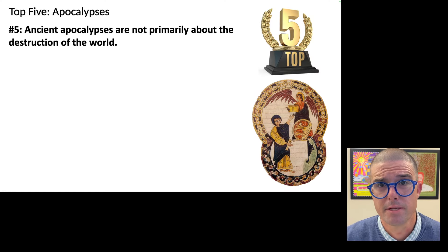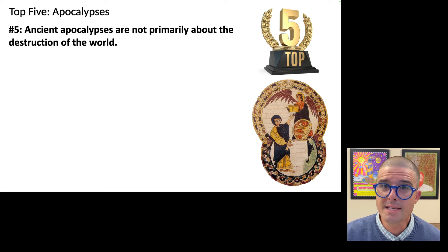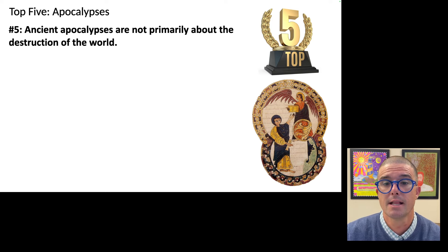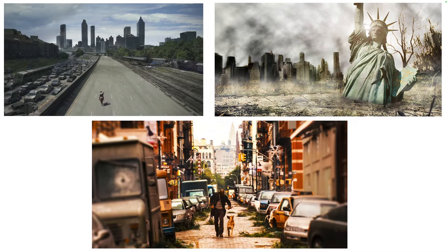Number five: ancient apocalypses are not primarily about the destruction or the end of the world. If you were to ask someone on the street to picture in their mind an apocalypse, they would likely think of images like these. The landscape is barren, vegetation is overgrown and taking over the asphalt in a busy city, and an iconic human-made structure like the Statue of Liberty is destroyed or in a state of shocking disrepair. The word apocalypse in modern parlance is about destruction and the end of the world. This is largely due to post-apocalyptic film and television, from which many of these images are taken.